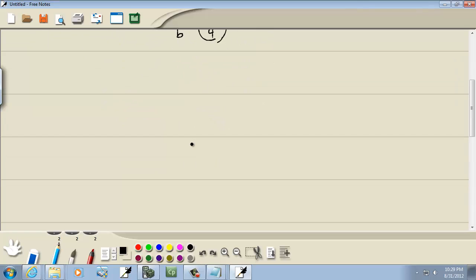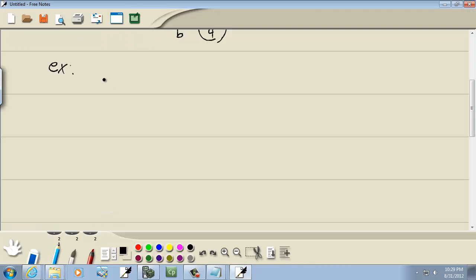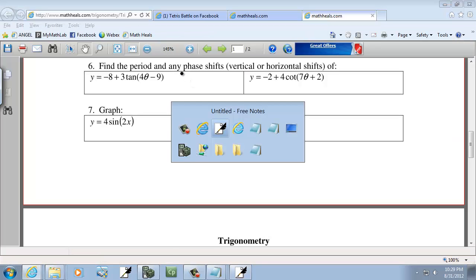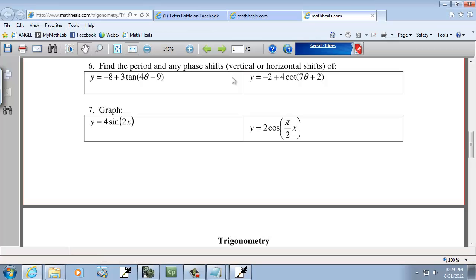Let's look at our second example. We have negative 2 plus 4 cotangent of 7 theta plus 2.